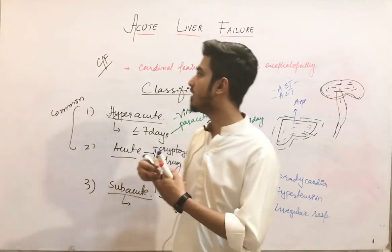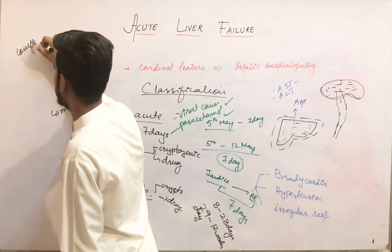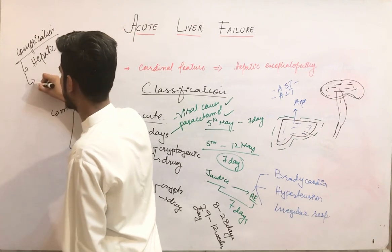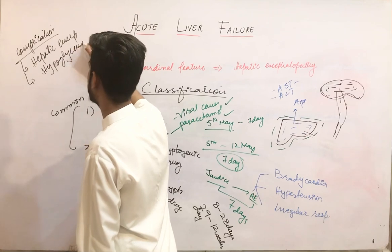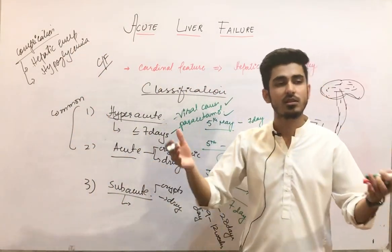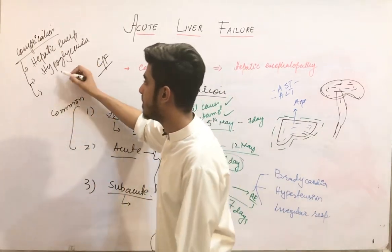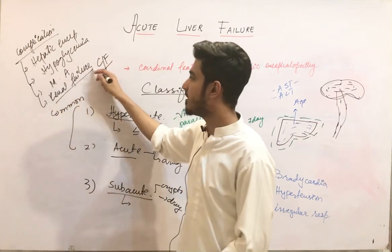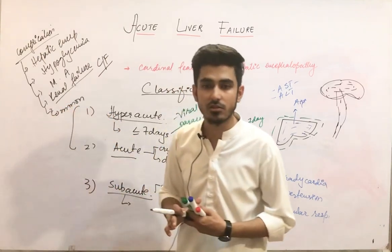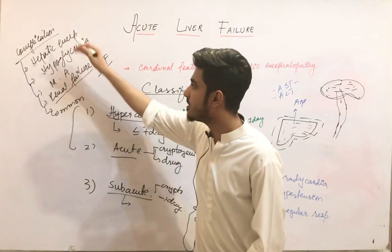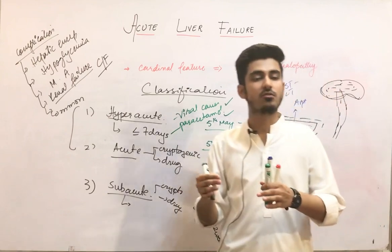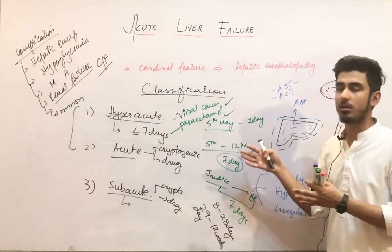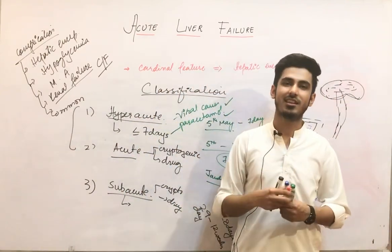Finally, the complications of acute liver failure include: hepatic encephalopathy itself, hypoglycemia (because glucose metabolism occurs in the liver), metabolic acidosis, renal failure — we will study hepatorenal syndrome in detail — and impairment of pulmonary function and coagulopathy. In the next lecture we will discuss management and poor prognostic factors of acute liver failure. Thank you so much.